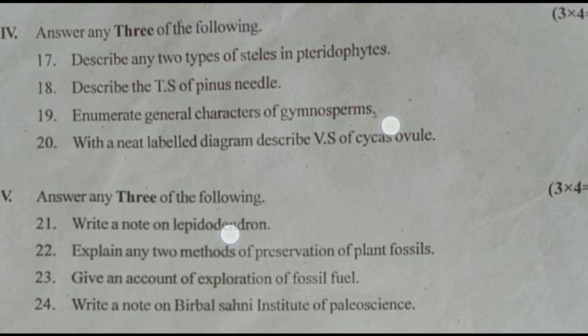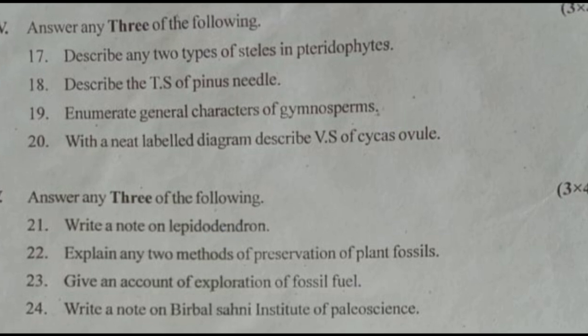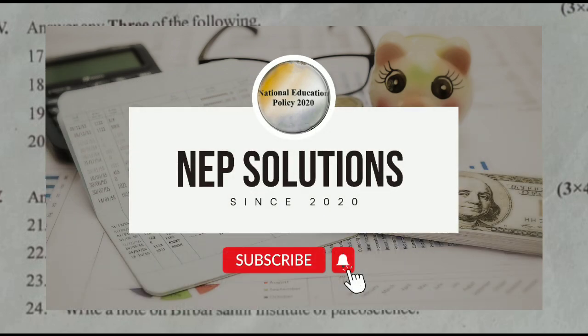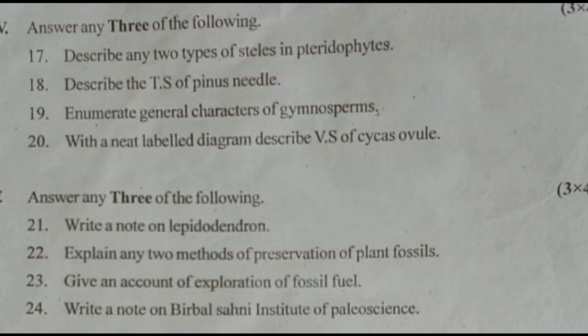Then nineteenth question: Enumerate the general characters of gymnosperms. They again asked the general characters of gymnosperms. Then, twentieth question: With a neat labeled diagram, describe VS of Cycas ovule. You have to draw the diagram here.